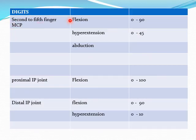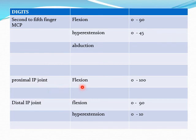For the second to fifth fingers, metacarpophalangeal joint movements are flexion, hyperextension, and abduction. Flexion: 0 to 90 degrees. Hyperextension: 0 to 45 degrees. Proximal IP joint, flexion: 0 to 100 degrees. Distal IP joint, flexion and hyperextension. Flexion: 0 to 90 degrees. Hyperextension: 0 to 10 degrees.